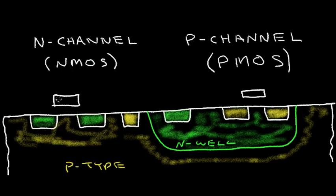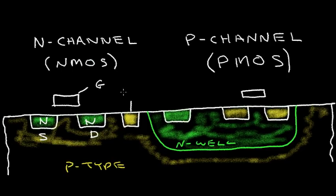Let's add some names to these terminals. This would be called the gate terminal. These N-regions are the source and drain — they're interchangeable since the structure is the same. I'll call this one the source and this diffusion the drain. This is a contact to the P-type substrate. This is the contact region to the N-well. For the PMOS, this P-type material forms the source and drain regions — I'll call this the source and this the drain.